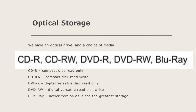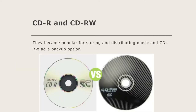For optical storage, you have an optical storage drive and a choice of media. CDR is compact disc read only, CDRW is compact disc read write, DVDR is digital versatile disc read only, and DVDRW is a newer version with greater storage. CDR and CDRW became popular for storing and distributing music, with CDRW used as a backup option.